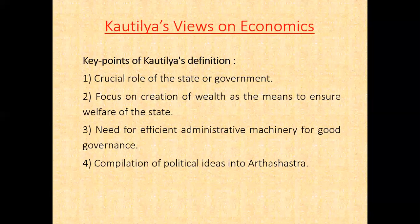Fourth key point: compilation of political ideas into Arthashastra. Kautilya compiled his political ideas into the Arthashastra, one of the world's earliest treatises on political thought and social order. It set forth ideas of state craft and modernism, and also a code of civil and criminal law. Kautilya's Arthashastra is mainly a work on the art of government. The gist of the above key points is: the state has to promote the economic welfare of the people and fully regulate its economic life. The state had to give subsidies for the development of trade, agriculture, irrigation, mines, cattle, and welfare.